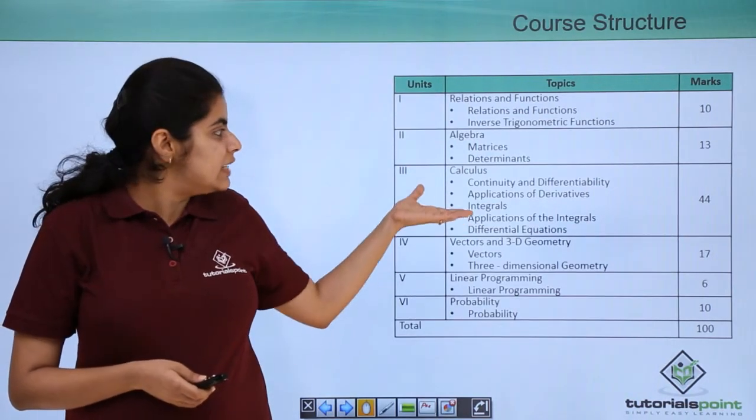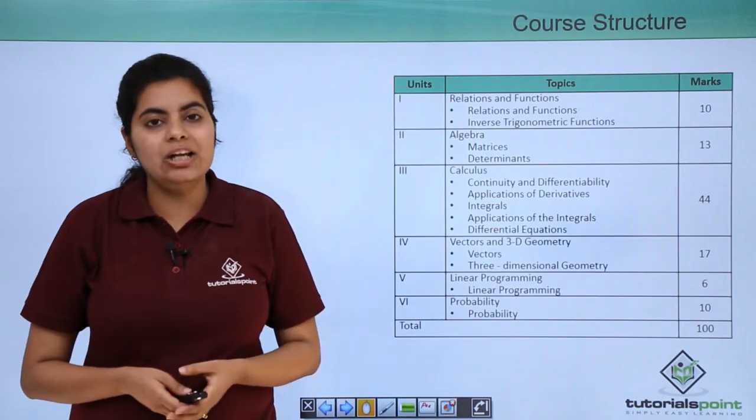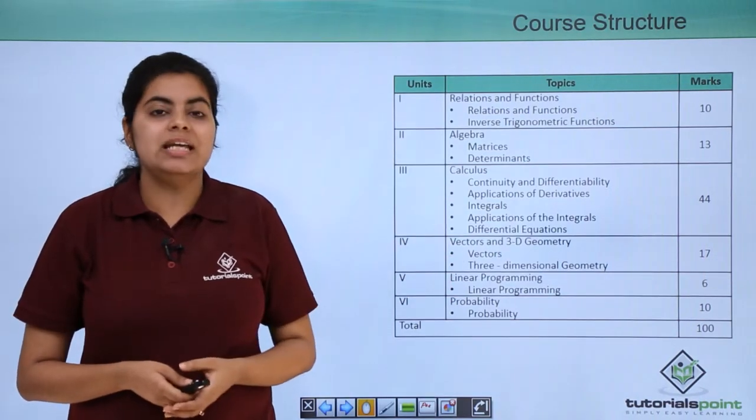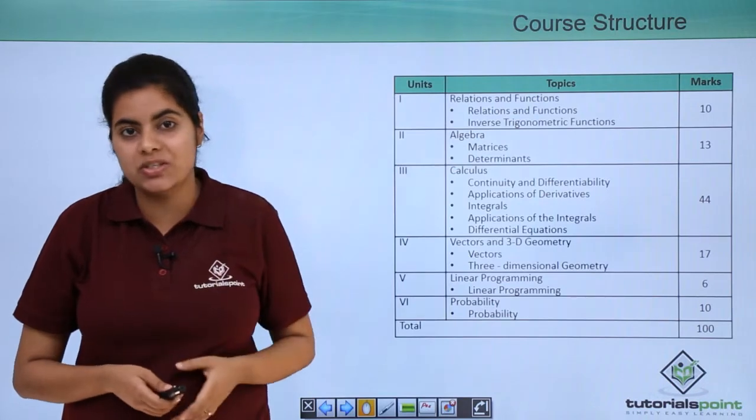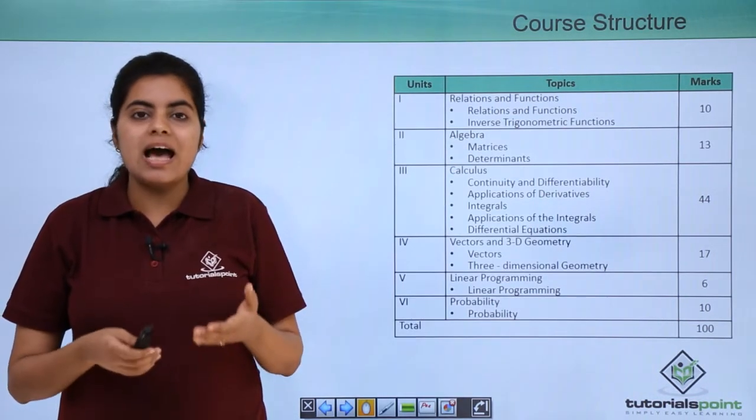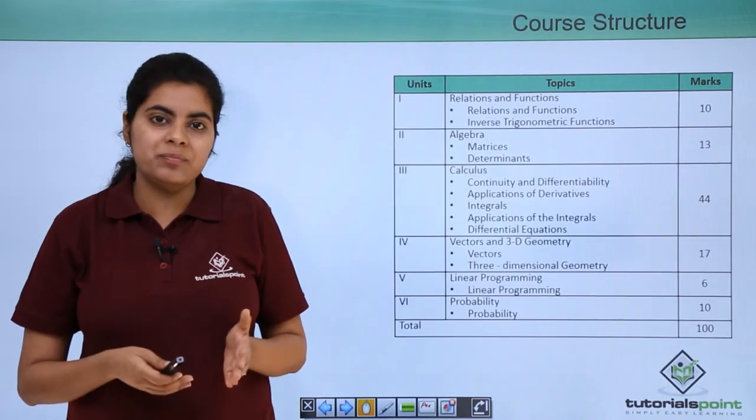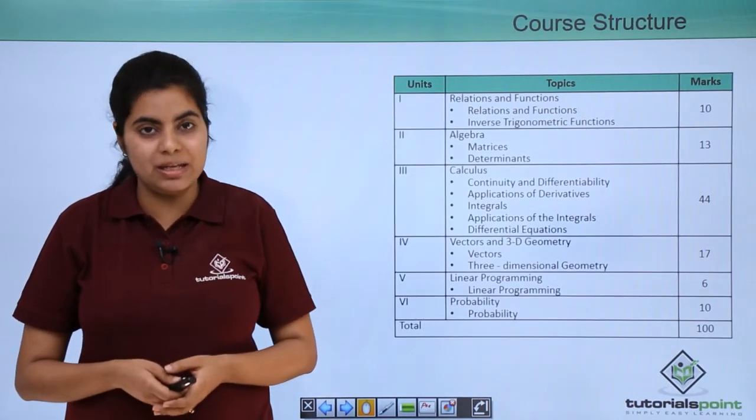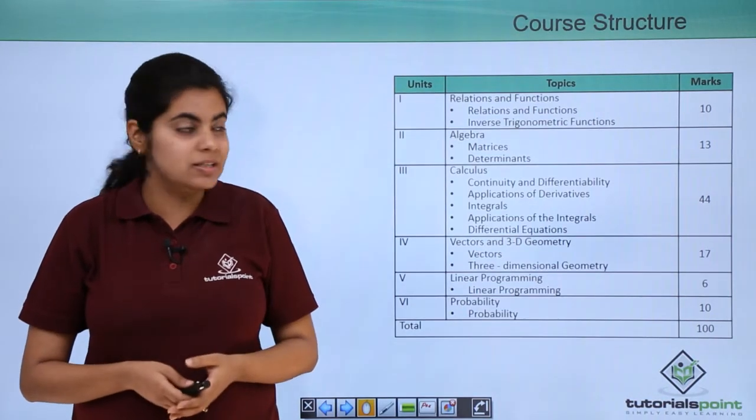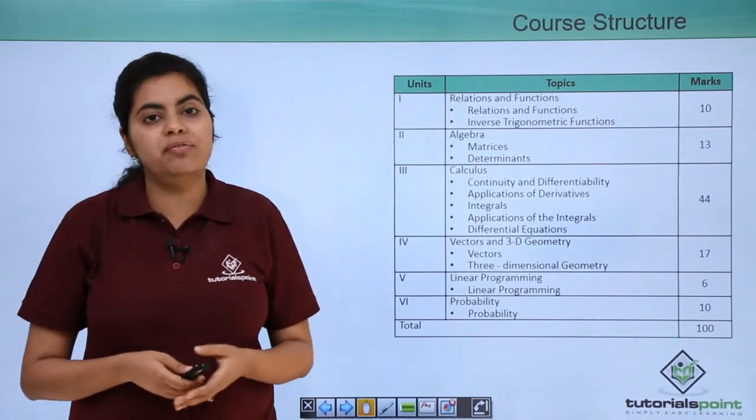The next unit that is under picture is calculus and it is a very big unit. It has namely five long chapters and these five chapters are basically considered as one of the toughest ones with respect to the whole math syllabus. And that is why because of its huge importance it covers for 44 marks.